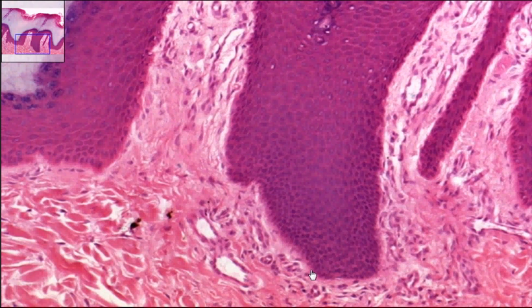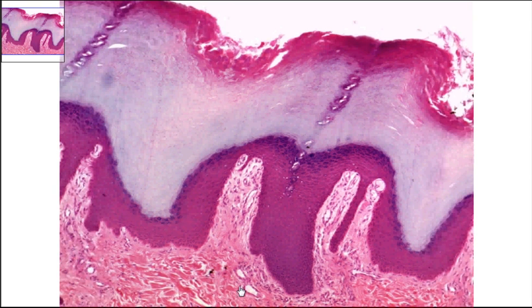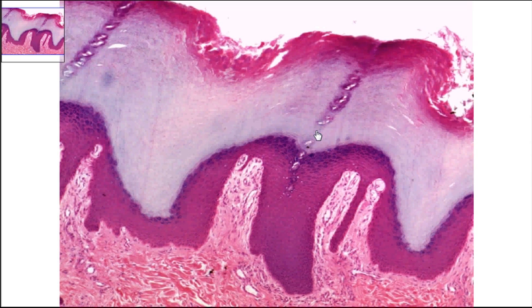So you have four different strata. Going outward, you have the stratum basale, the stratum spinosum, the stratum granulosum, and the stratum corneum. All of these make up the epidermis.